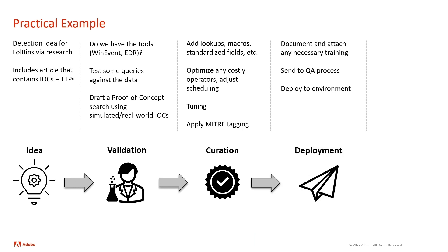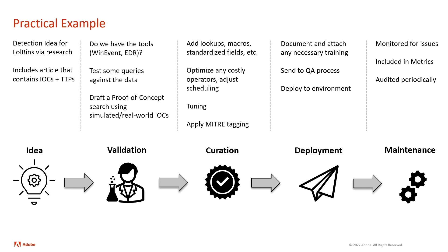Then we want to deploy that search — document it, attach the necessary training, and send it to the QA process. This is going to be like peer review or maybe some automation if you have that. Following a successful review, we deploy it to our environment. After it's deployed, along with all of our other library of searches, we want to continue to maintain those — monitor them for issues. We can have a scheduled job that runs against our searches to catch any potential issues. We want to include them in our metrics to report different coverage, what our false positive and true positive rates are, and we want to do a periodic audit that covers all of our environment to see where we're standing as a whole.